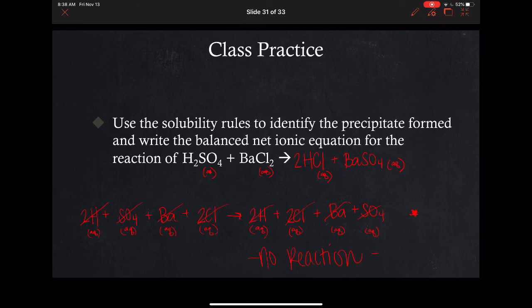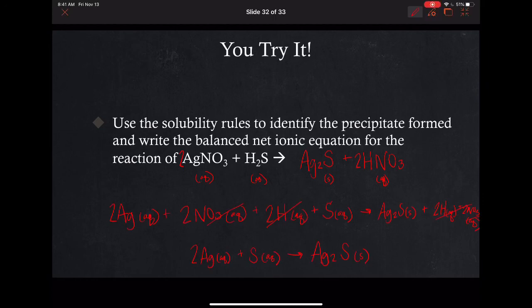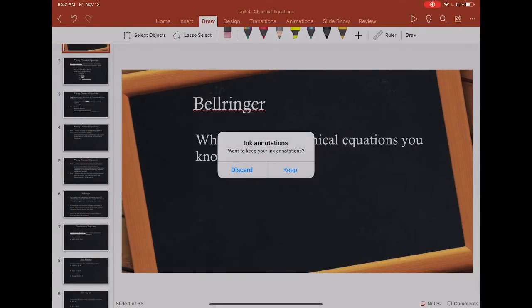Let's go ahead and take a look at the next one. I've already predicted the products and balanced the equation. I'm going to write out the complete ionic equation and then the net ionic equation. Once you get this fully worked out, you should see that your ions that you cross out are the nitrate and the hydrogen, leaving you with 2Ag⁺ aqueous plus S²⁻ aqueous yields Ag₂S silver sulfide. I think that's all I'm going to work with you today.